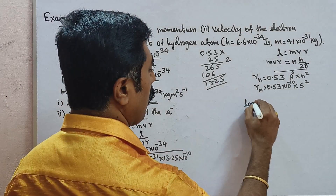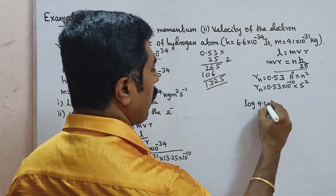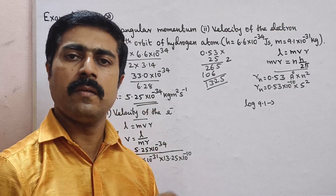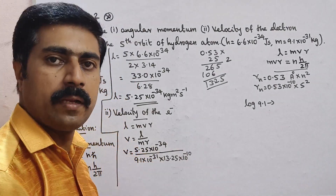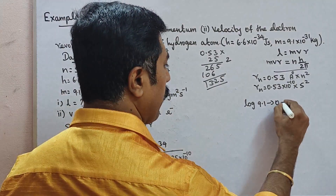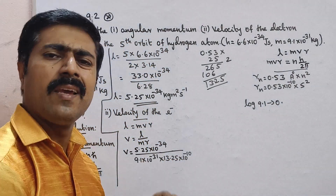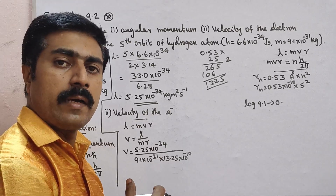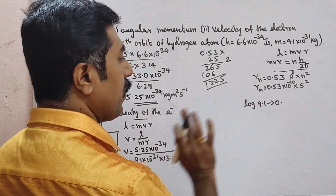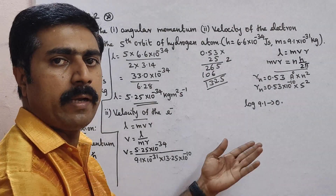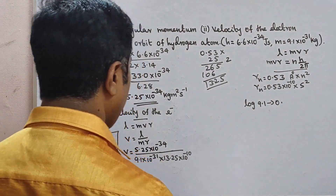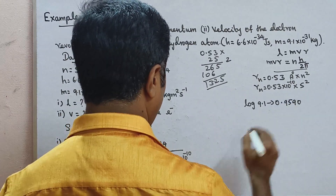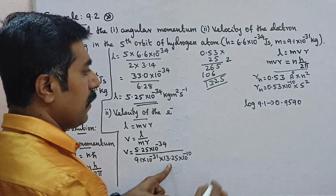Using log division: log of 9.1 - the number of digits before decimal is 1, so the characteristic is 0. Log 9.1 gives 0.9590. Continue with the log calculation.